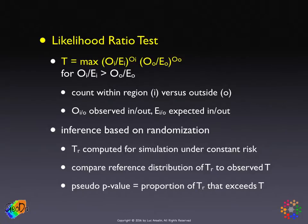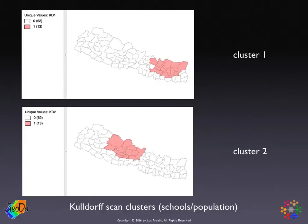The results of the Kulldorff scan statistic are scan locations organized in order of importance, with the highest significance (smallest p-value) as cluster one, the next as cluster two, and so on. Using the same Nepal example, cluster one is totally different from anything seen so far, but cluster two has some overlap both with BSAC-NEWEL and with the local Moran clusters.